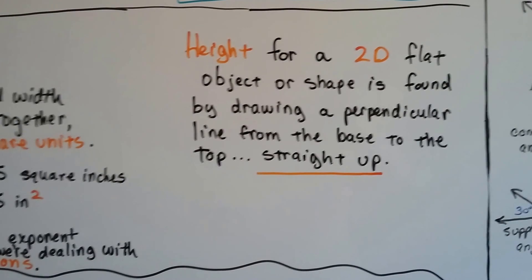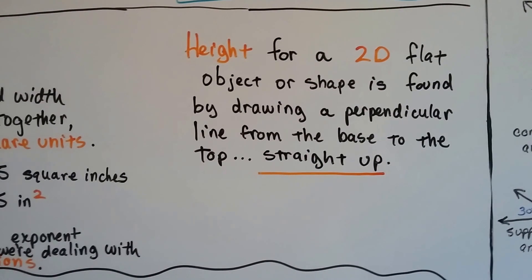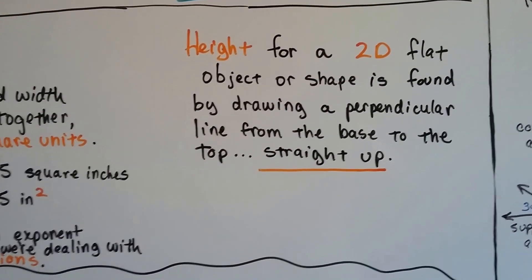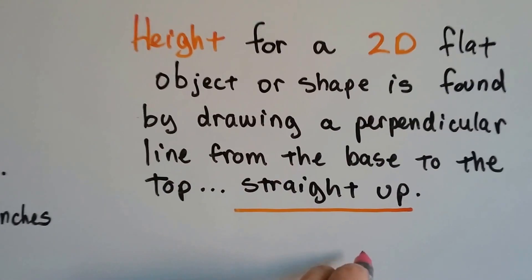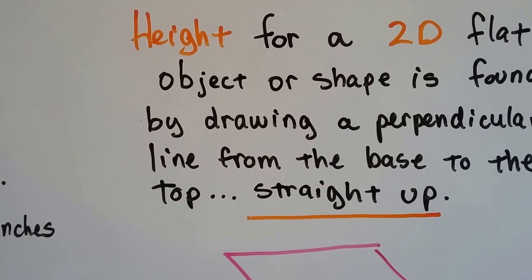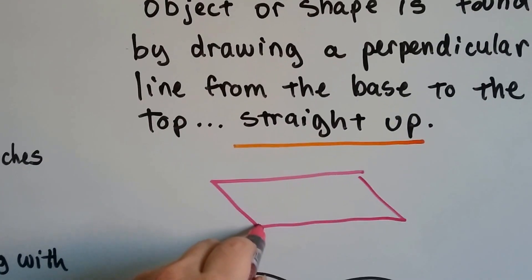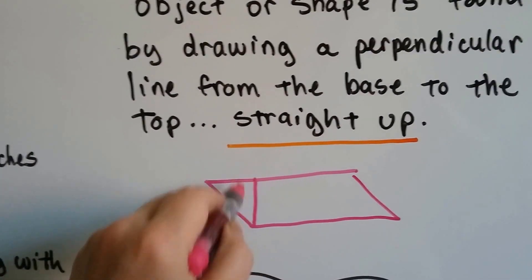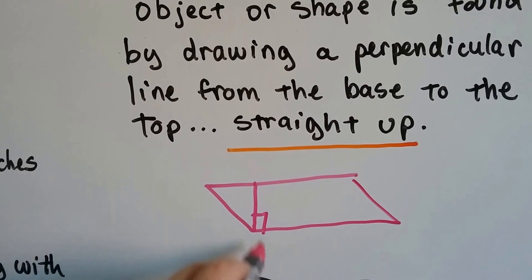Height for a 2D flat object or shape is found by drawing a perpendicular line from the base to the top straight up. So if we've got a parallelogram, our height goes straight up from the base and it's a perpendicular line.